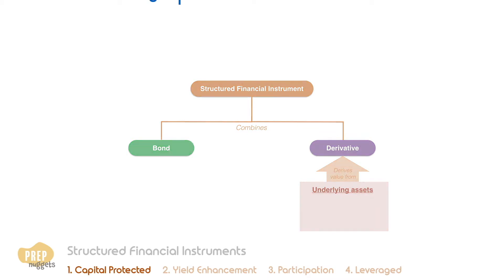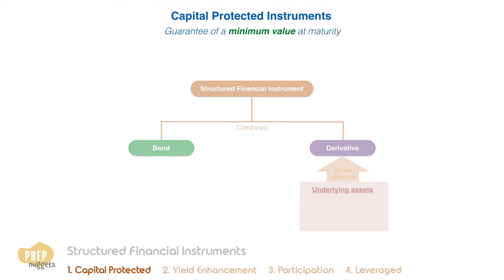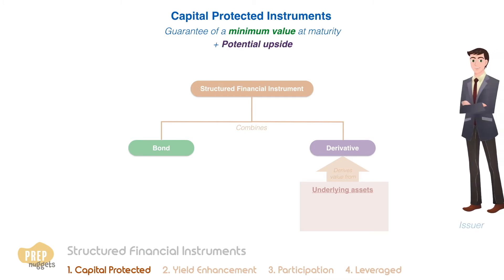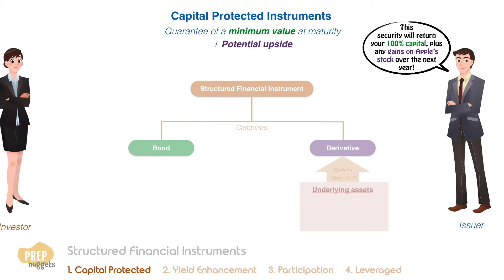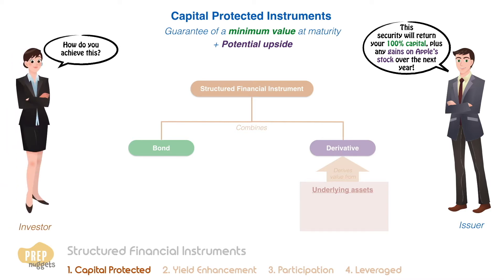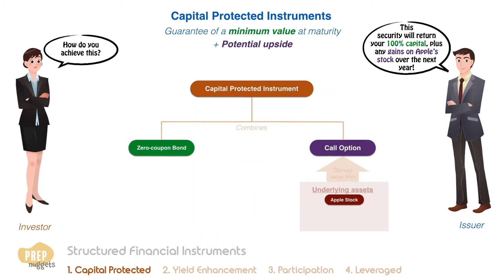The first category is capital-protected instruments. Such an instrument offers a guarantee of a minimum value at maturity, as well as some potential upside gain. For example, an issuer can promise to return 100% capital after one year, plus a percentage of any gains on Apple stock over the year. One simple way to structure such a security is to combine a zero-coupon bond with a call option on the underlying asset, which in this case is the Apple stock.